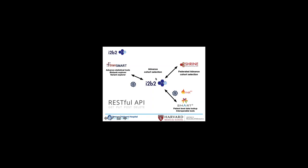How to use I2B2 for advanced cohort selection and then use TransMart for all the advanced statistical tools, the Biobank Explorer, the Variant Explorer using a RESTful API. Once you have the full I2B2 back, you'll have the capability to use SHRINE — which enables federated queries across multiple systems with more than 8 SHRINE networks and more than 50 sites in production — so that TransMart connected to SHRINE becomes plug-and-play. SMART on FHIR applications also become plug-and-play because everything is part of the I2B2 ecosystem.